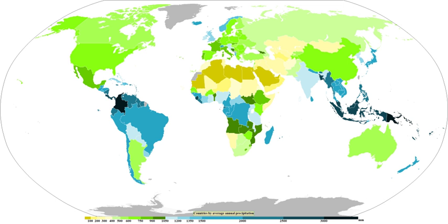A temperature profile showing a warm layer above the ground is most likely to be found in advance of a warm front during the cold season, but can occasionally be found behind a passing cold front.